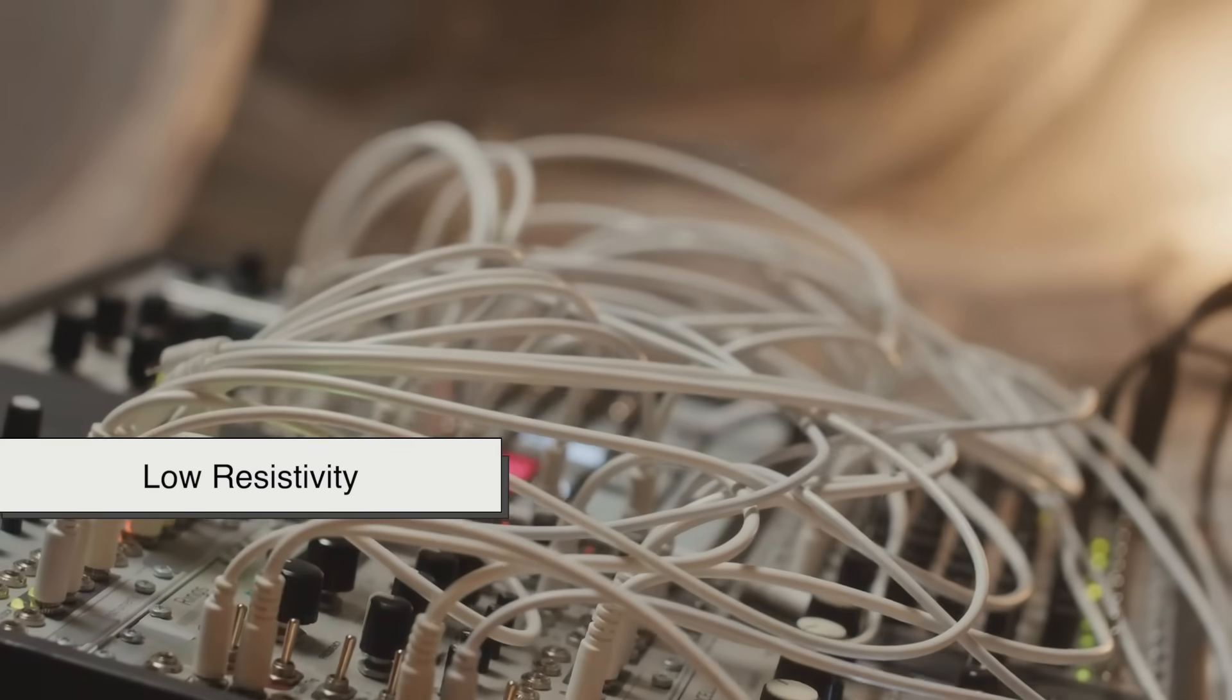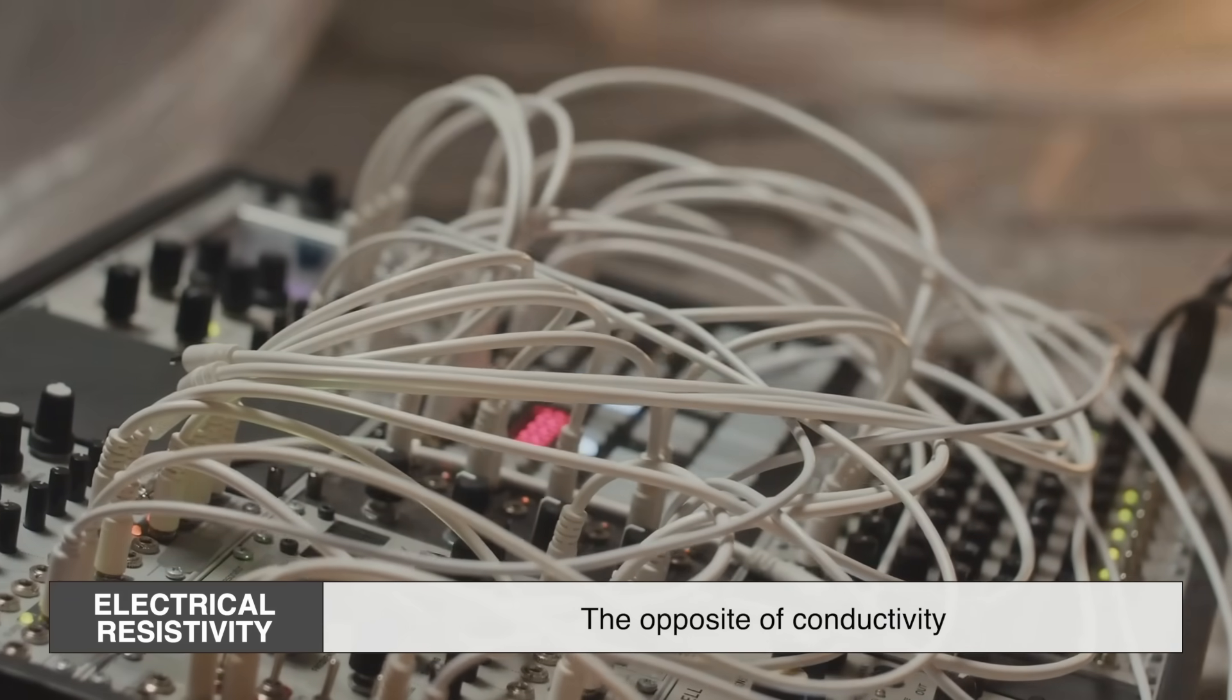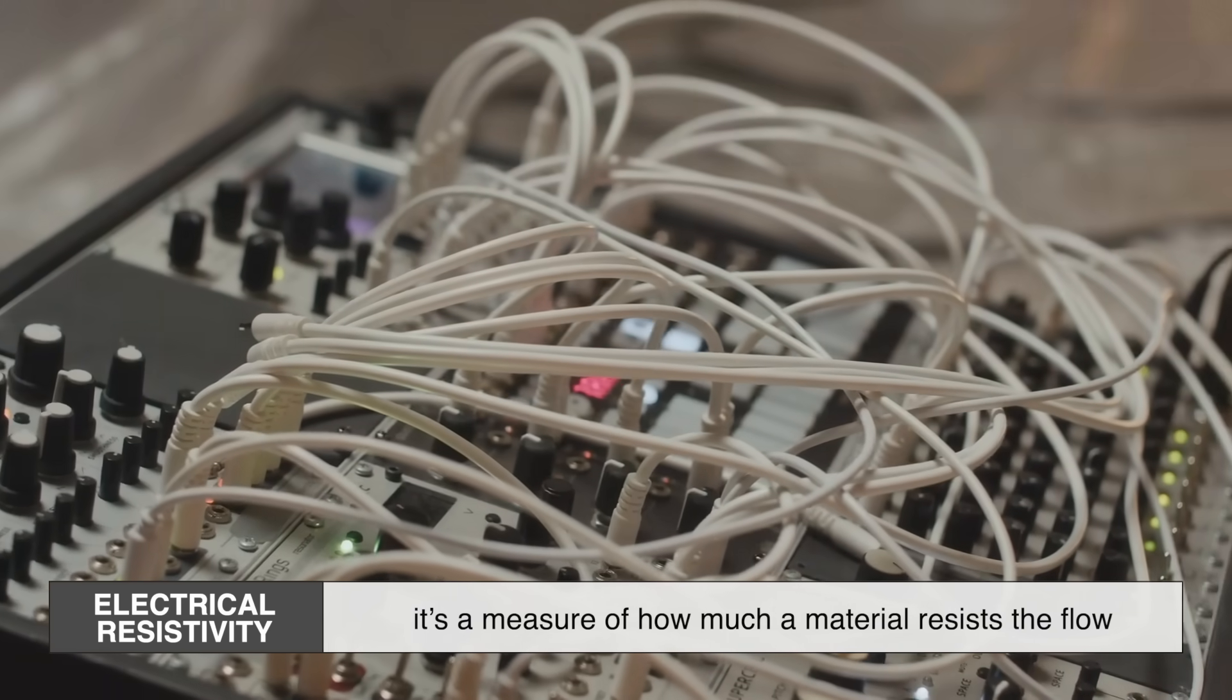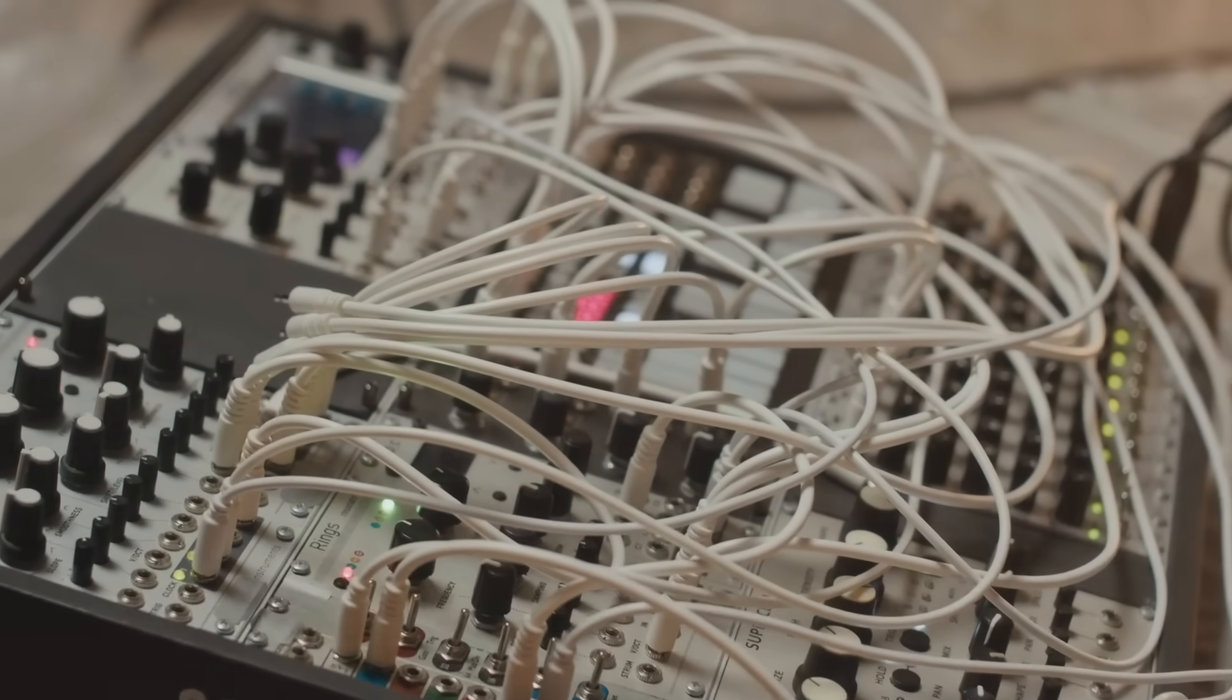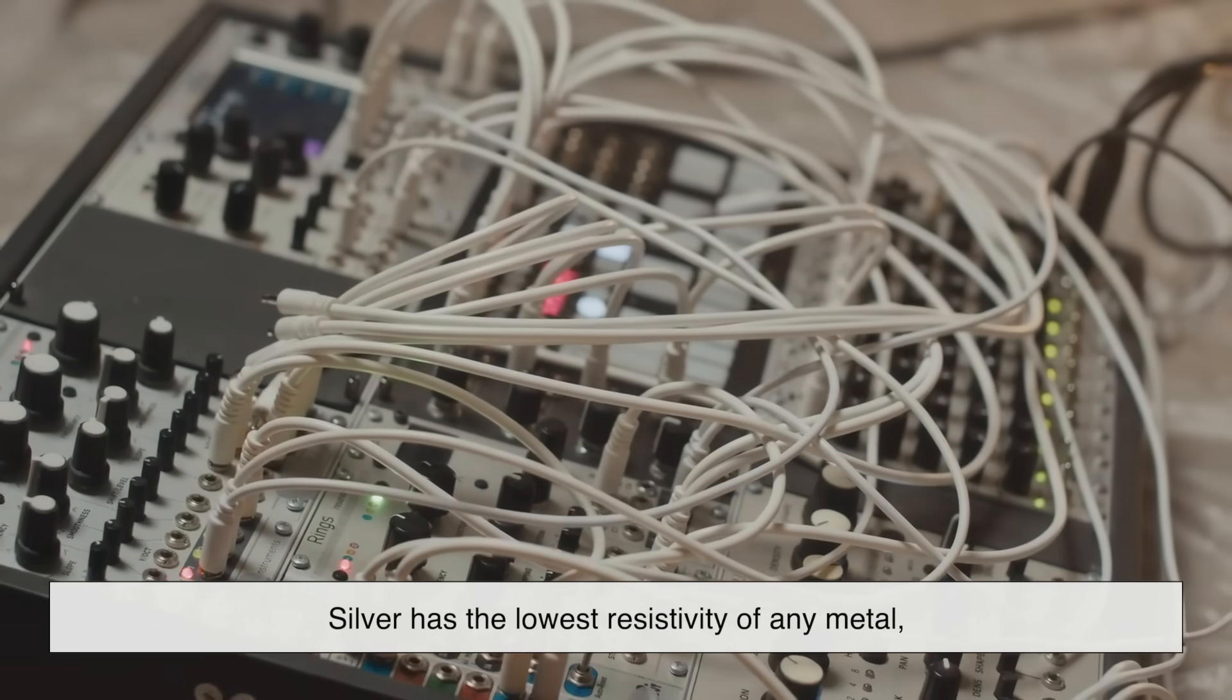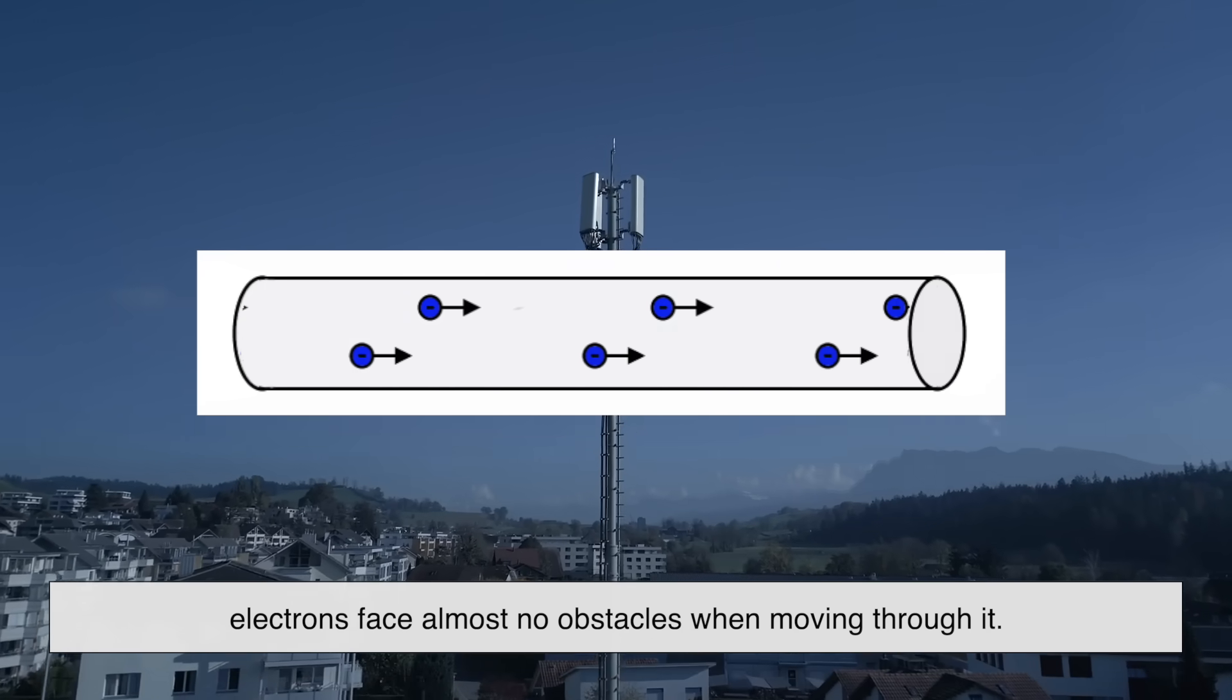Another key factor is low resistivity. Electrical resistivity is basically the opposite of conductivity. It's a measure of how much a material resists the flow of electric current. Silver has the lowest resistivity of any metal, meaning electrons face almost no obstacles when moving through it.